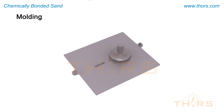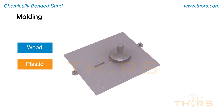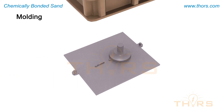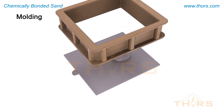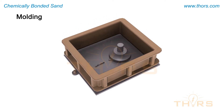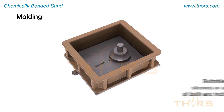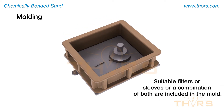The molding process begins with the preparation of a pattern, which is a replica of the casting made of wood, plastic, or metal. Then, a flask is placed around the pattern to contain the sand. If necessary, suitable filters or sleeves or a combination of both are included in the mold.